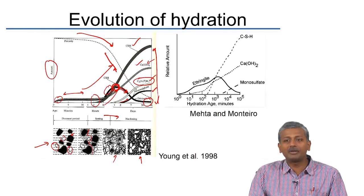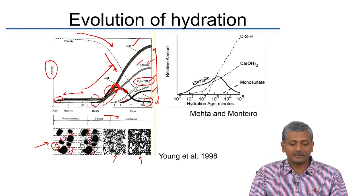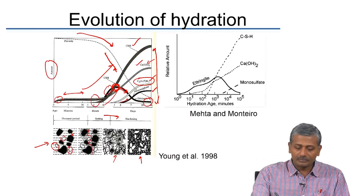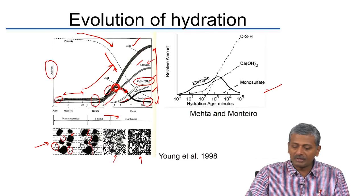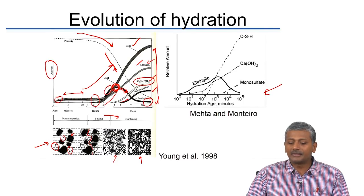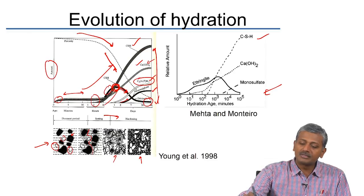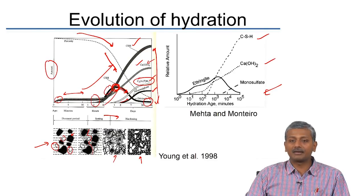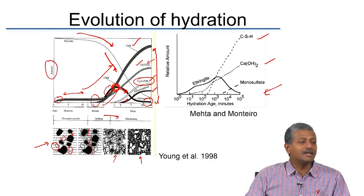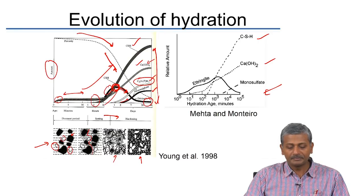Another chart from a different textbook shows the same trends: reduction in ettringite with subsequent increase in monosulphate, and stable calcium silicate hydrate and calcium hydroxide phases at the end of the hydration period.